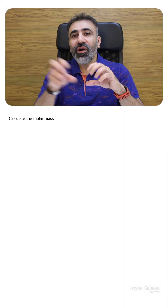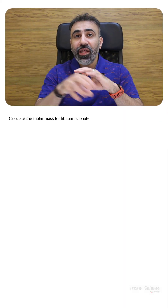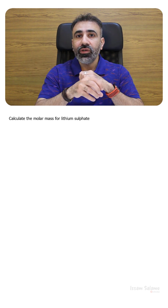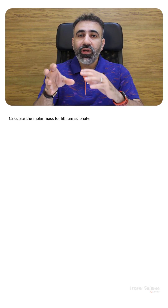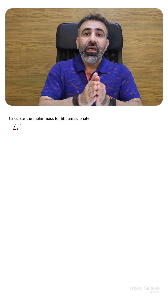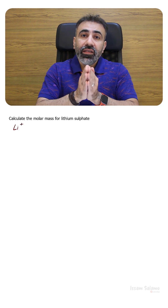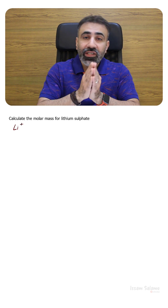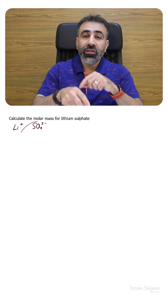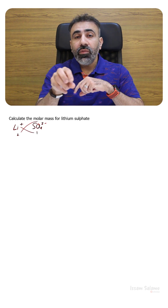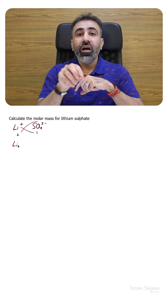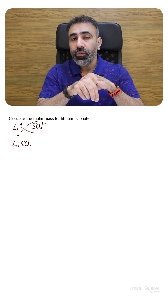Calculate the molar mass for lithium sulfate. Lithium sulfate is an ionic compound, so we have to write its formula first. We write the formula for the lithium ion, which is Li+, and the sulfate ion, which is SO4 2-. We swap the charges, so the ionic formula for lithium sulfate is going to be Li2SO4.